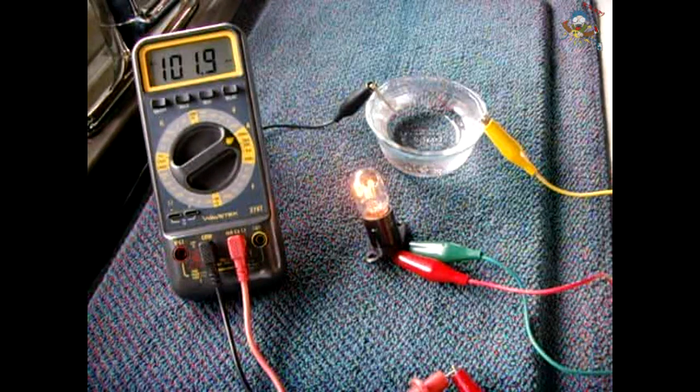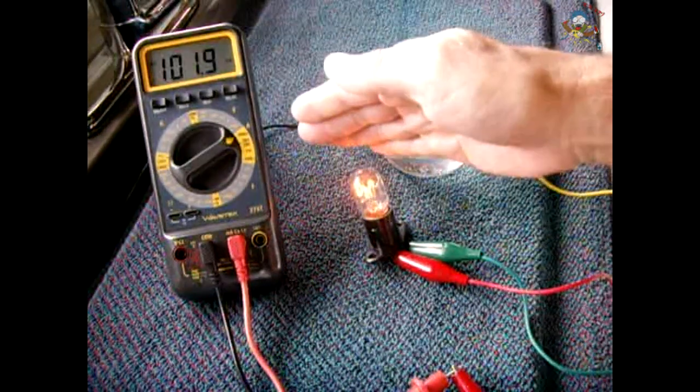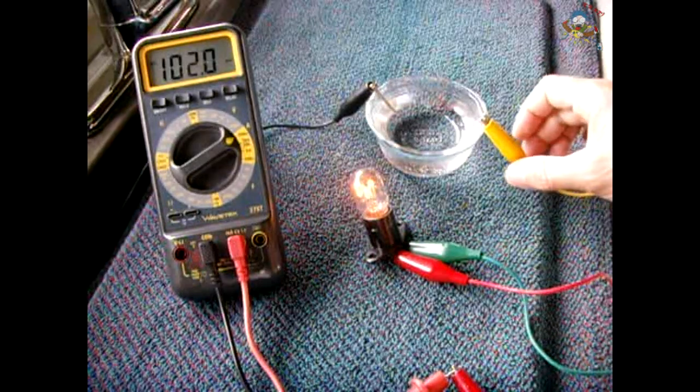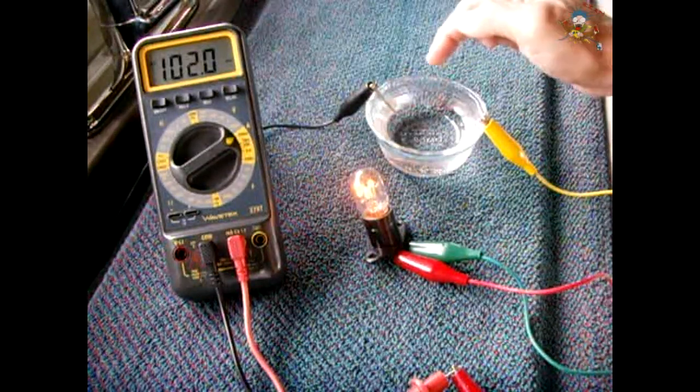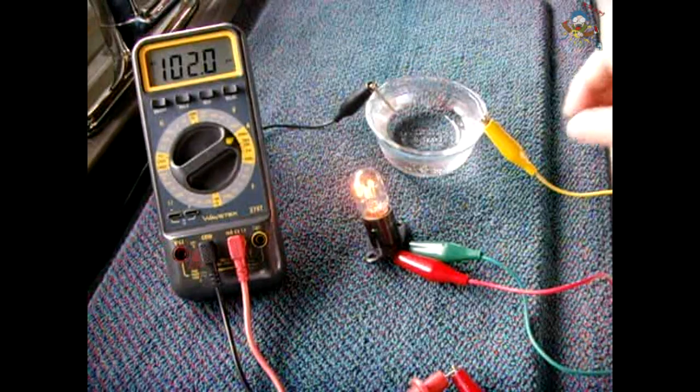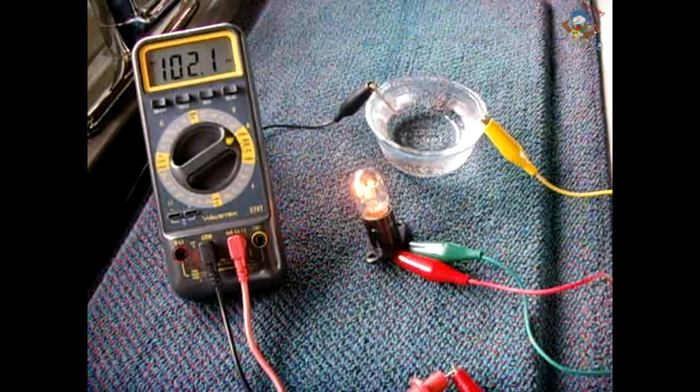As you now see, we are drawing 102 milliamps. The light is illuminated, though partially. Now, if I take the nail and I bring it closer, there's going to be less resistance in that water the closer we get to the nail. So the light should get brighter, current should go up.